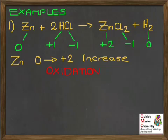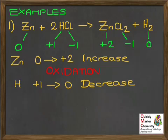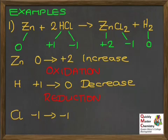Moving along, we've got the H in the HCl. On the left that's plus 1, and on the right it's gone to 0. Plus 1 to 0 is a decrease, and a decrease in oxidation state means reduction. So the hydrogen in hydrochloric acid has been reduced. We've also got the Cl in the hydrochloric acid — on the left it's minus 1, and on the right it's minus 1. There's no change there; that's just a spectator.